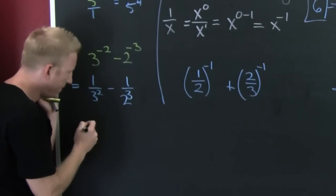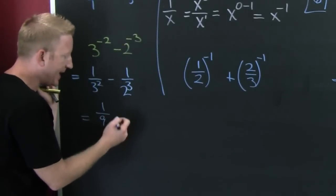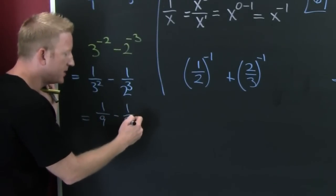There's more. This is 1 over 9. Minus 1 over 8.